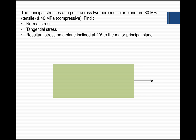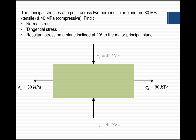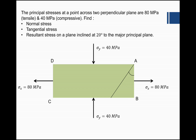Let us draw this diagram. We have a biaxial stress system carrying stress in the x-direction assumed as 80 MPa tensile, and the compressive stress of 40 MPa is sigma y. We have to find out the normal stress, tangential stress, and resultant stress on a plane inclined at an angle theta equal to 20 degrees. Plane AE is making an angle of 20 degrees with sigma x of 80 MPa, and we need to find the stresses on this plane AE.